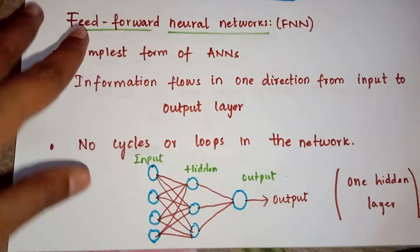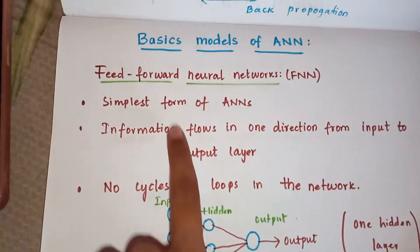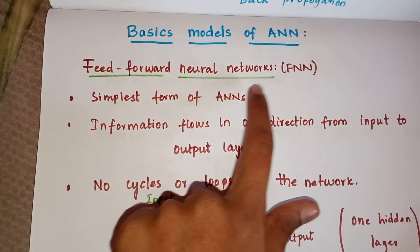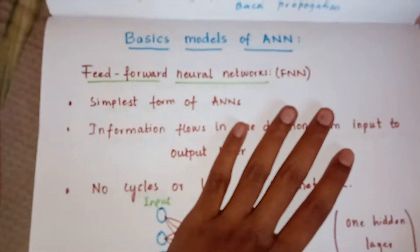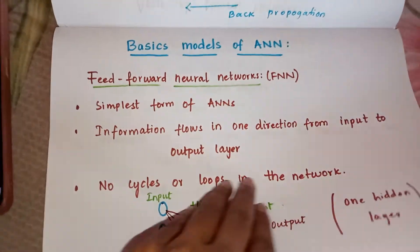As you can see, there is only one hidden layer. This is the feed forward neural network, also called FNN.